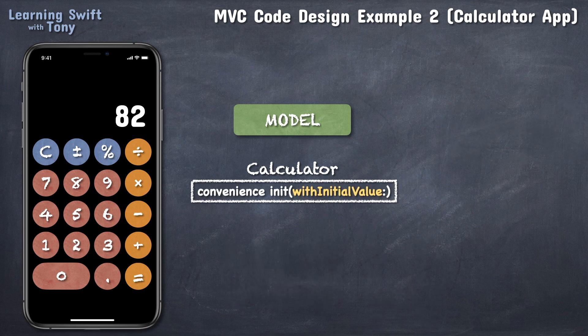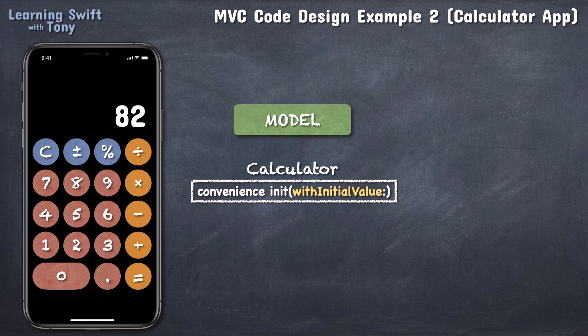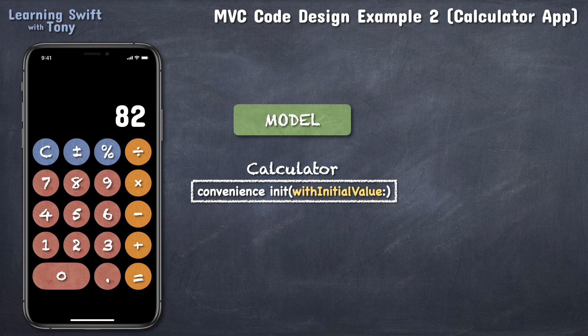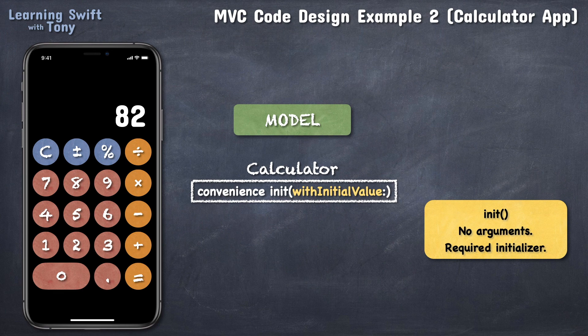An initializer like this would be just for convenience, which makes it a convenience initializer. Whoever is going to use our calculator model object might choose to use this convenience initializer, but they might also choose to use the simple one, the one without any arguments, which is the required one.